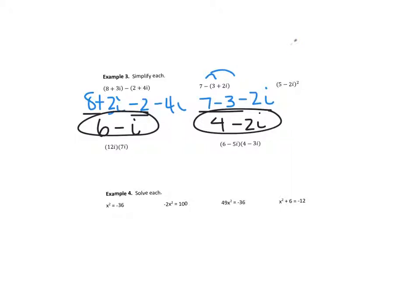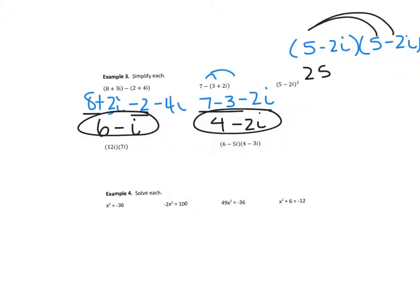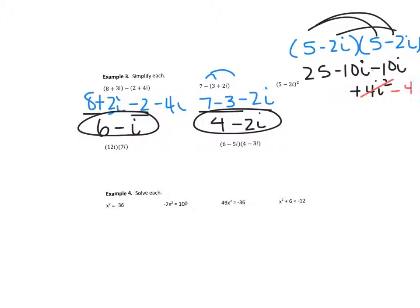For (5 minus 2i) squared, that's (5 minus 2i) times (5 minus 2i). Foiling: first is 25, outside is minus 10i, inside is minus 10i, and last is 4i squared. Since i squared is negative 1, positive 4i squared turns into negative 4. So I combine: 25 minus 4 is 21, and then minus 20i. The answer is 21 minus 20i.